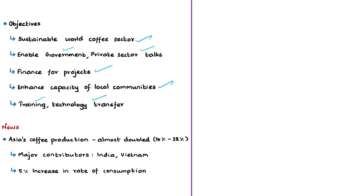According to the news article, Asia's coffee production has almost doubled in recent years — from 16 percent to 32 percent. The major contributors to this production are Vietnam and India. Most Asian countries have reported a 5 percent increase in coffee consumption, while India has seen a 6 percent increase. The ICO has also conducted a comprehensive stakeholder consultation study to understand the problems of the coffee industry.